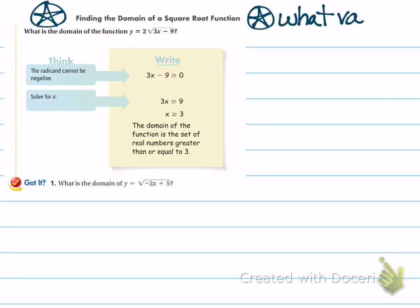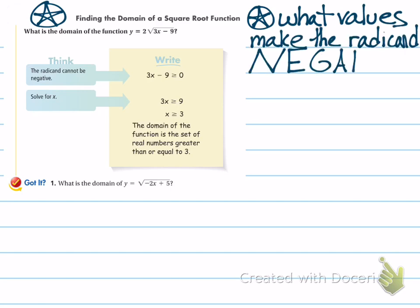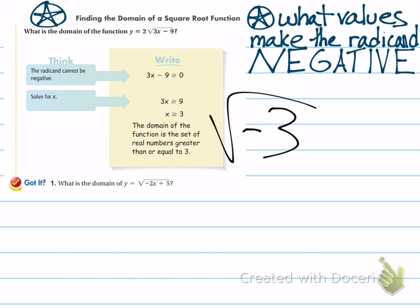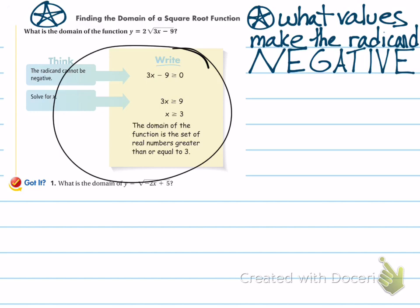Here's an example where we're going to talk about the domain for a function that is a little more involved. The radicand says 3x minus 9, and the one thing you need to know is whatever values make the radicand negative — those are the values that you cannot include in the domain, because you can't square root a negative number. That's just not allowed. You can't take the square root of negative 3 because the square root doesn't exist. So when you're finding the domain of a square root function, you want the radicand to be greater than or equal to 0.